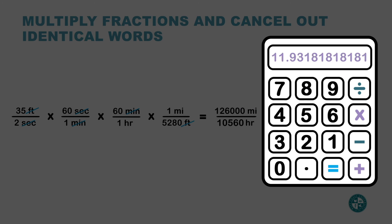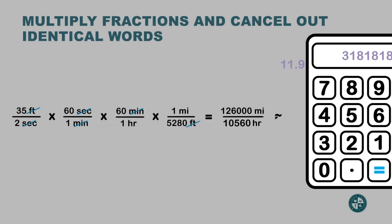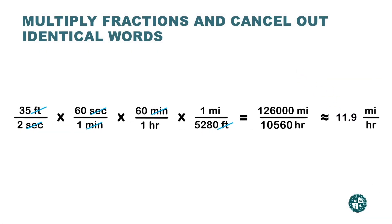Using the calculator: 126,000 divided by 10,560 gives a long decimal. In dimensional analysis, the instructions will tell you how many decimal places to round to. If rounding to one decimal place, look at the digit to the right — if it's five or more, round up; otherwise it stays the same. Everything to the right is truncated. So the answer is 11.9 miles per hour.